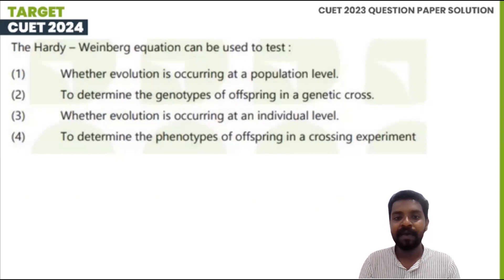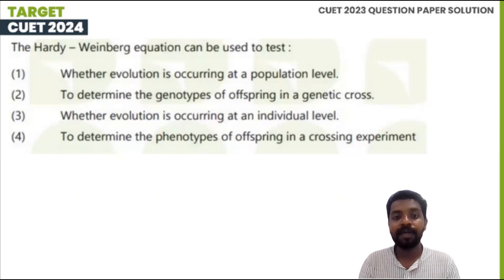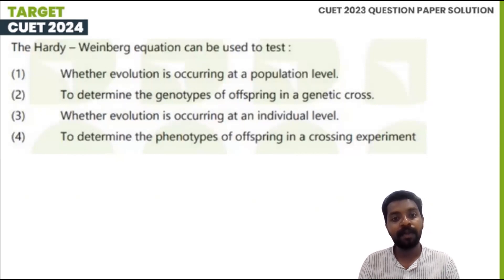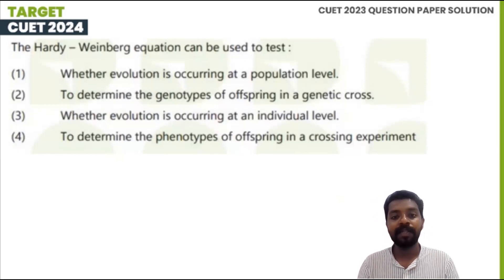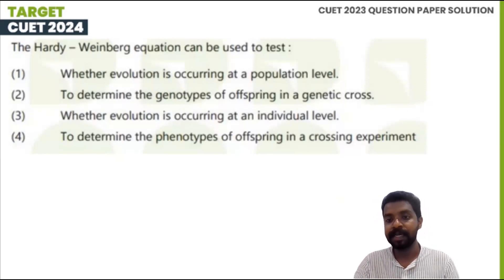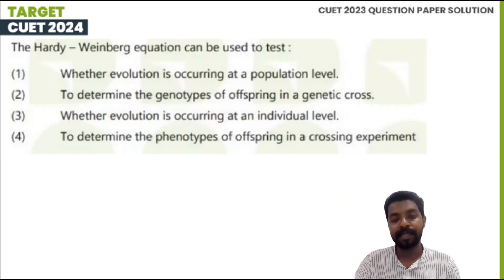Hardy-Weinberg equilibrium is used to determine whether evolution is occurring at the population level, to determine the genotypes of offspring in a genetic cross, whether evolution is occurring at the individual level, and to determine the phenotypes of offspring in a crossing experiment.